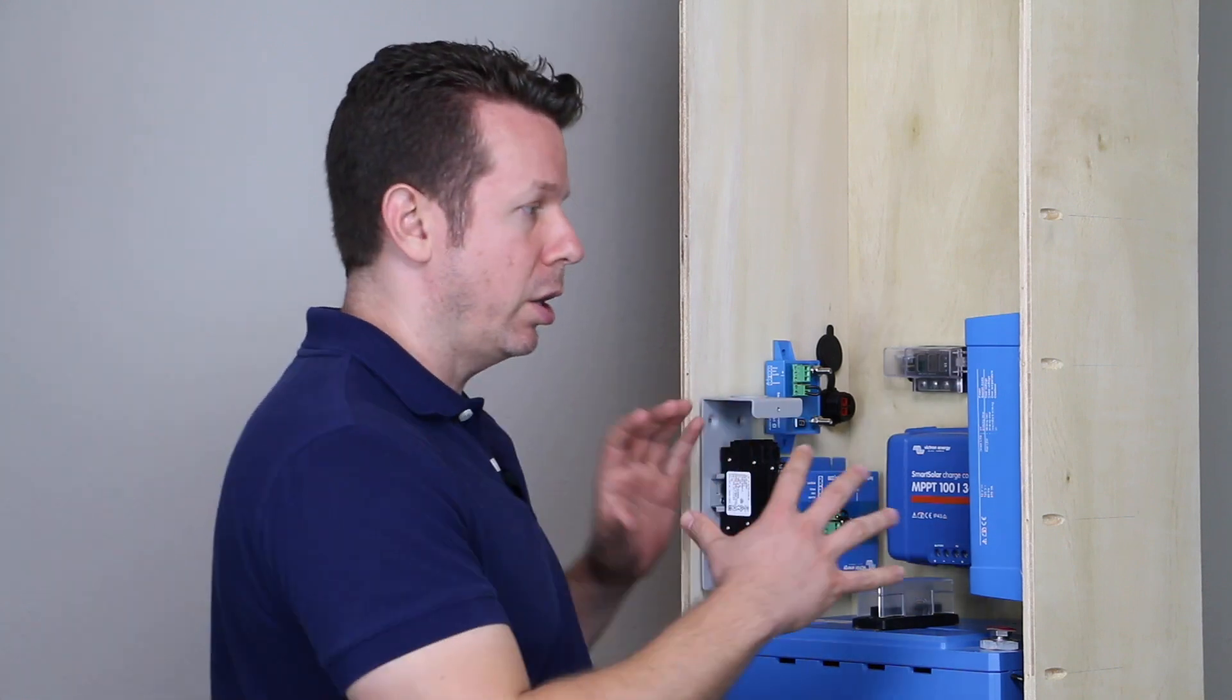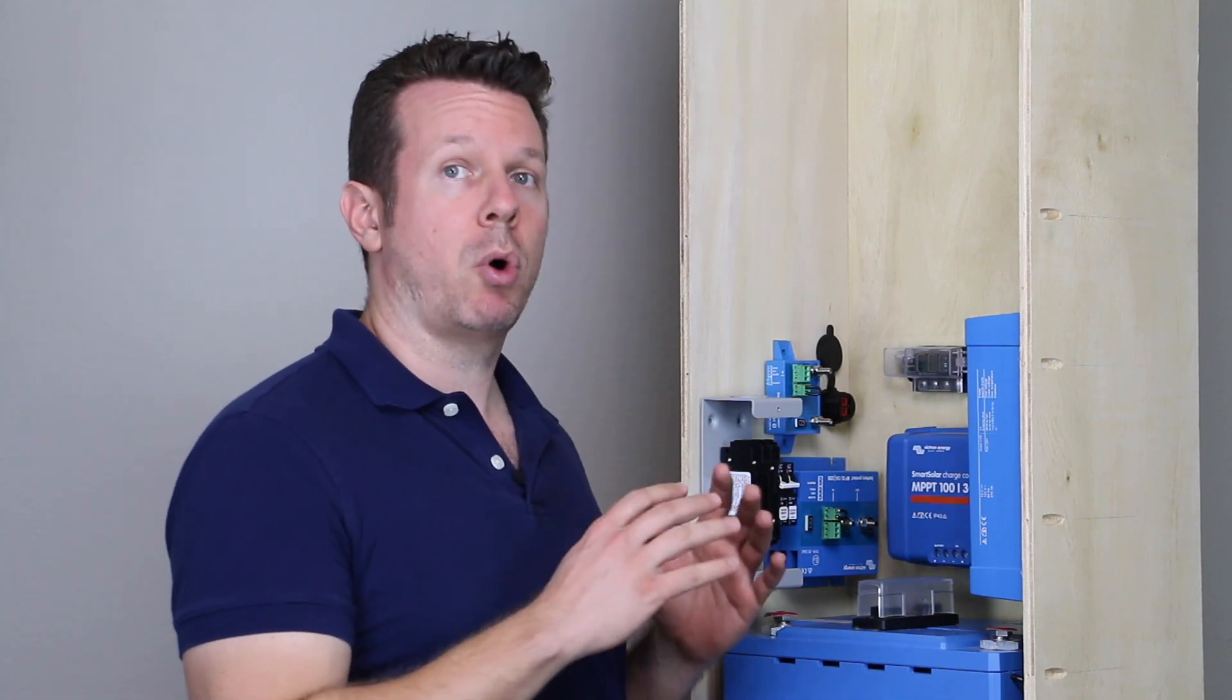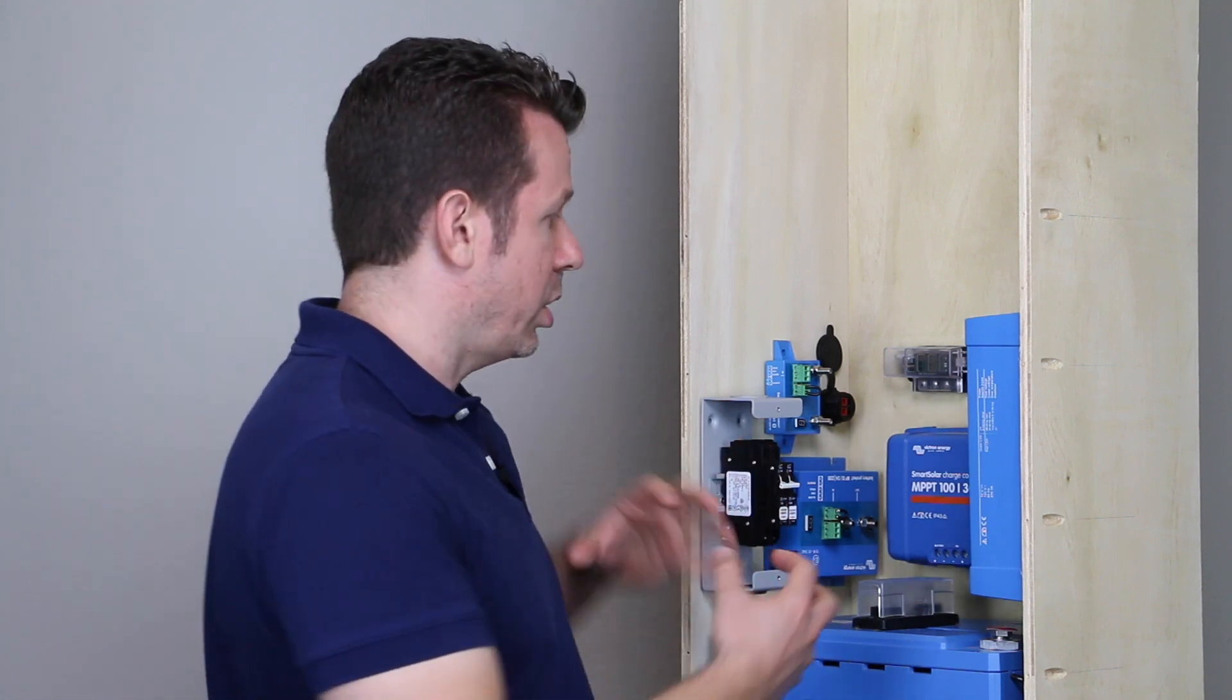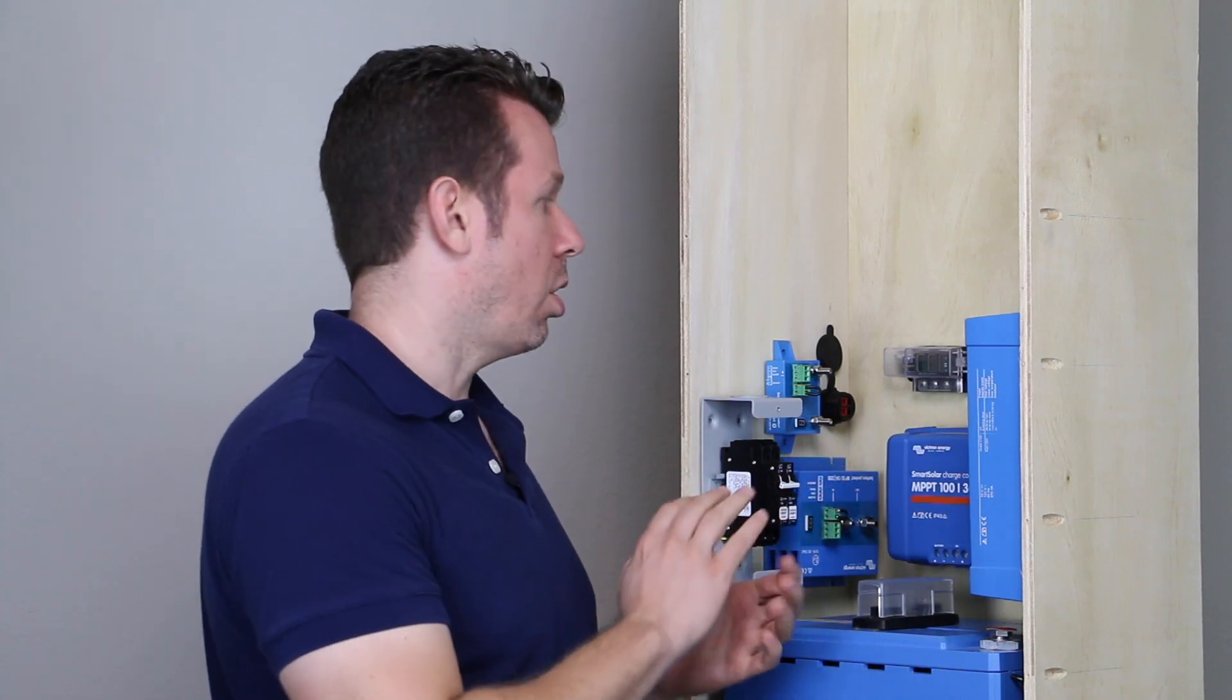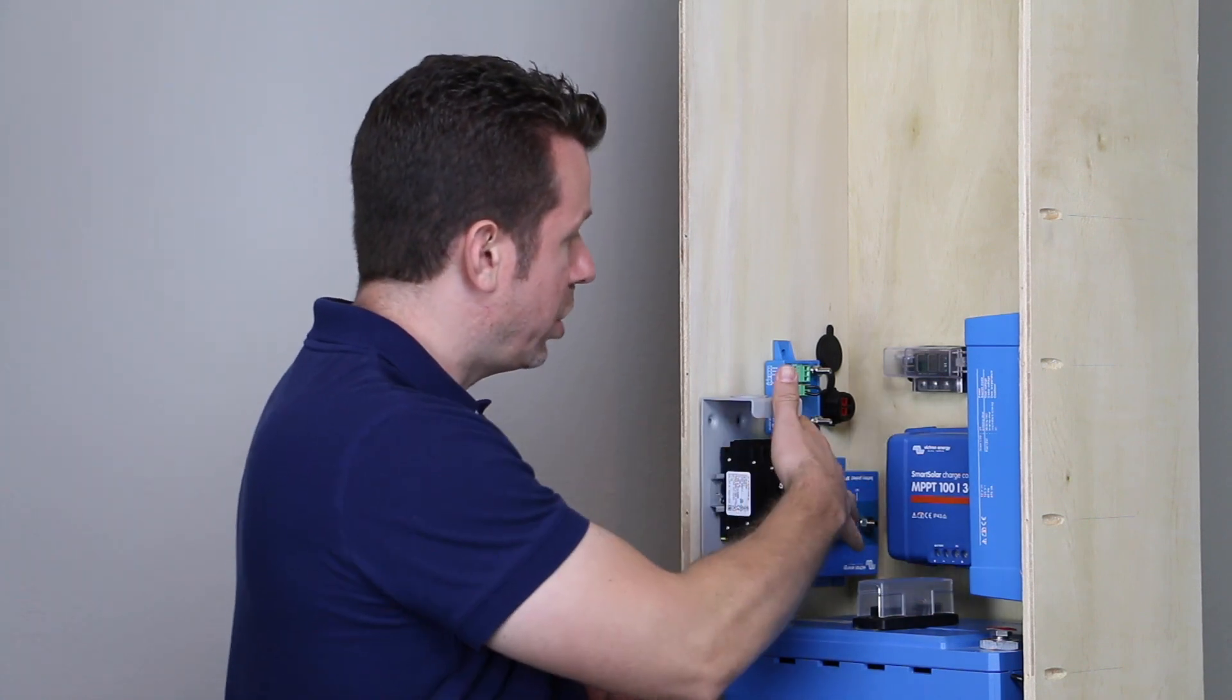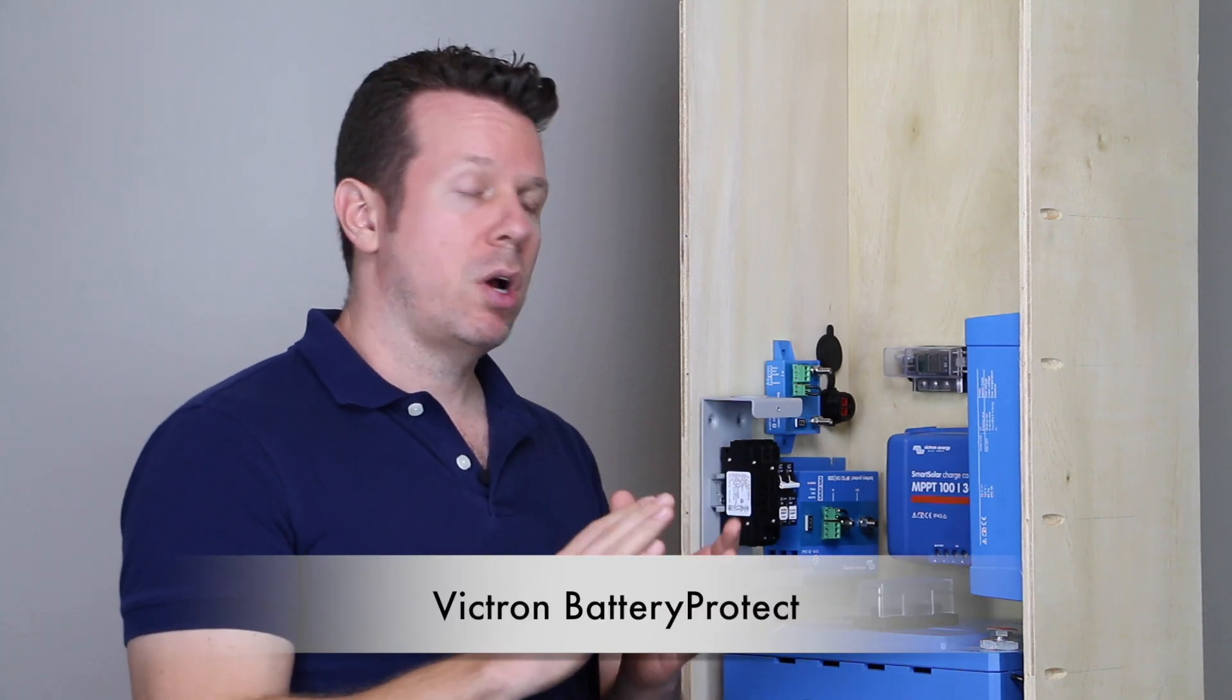These are going to be used as remote cutoffs so we can shut down the system from the front of the box. So because it's enclosed, we're not going to be able to reach in and turn off a switch when we want to turn the system on or off. So we need essentially remote switches built into the system so we can have one on-off switch outside the box that will shut things down when we turn that switch off. And that is what these blue things are going to be. They are called Battery Protects from Victron Energy.